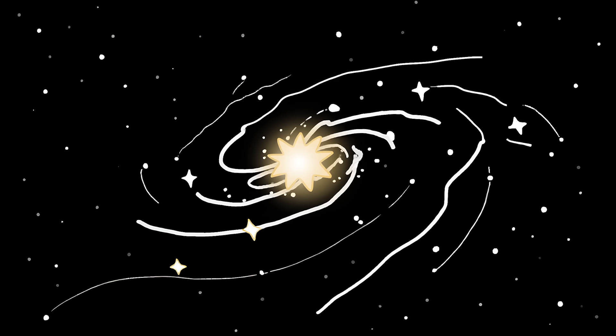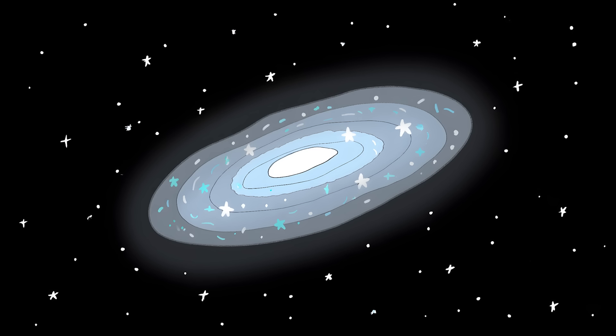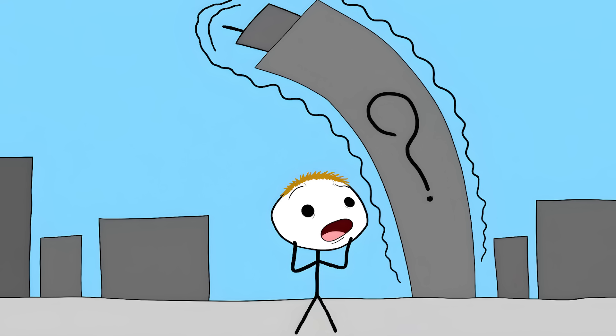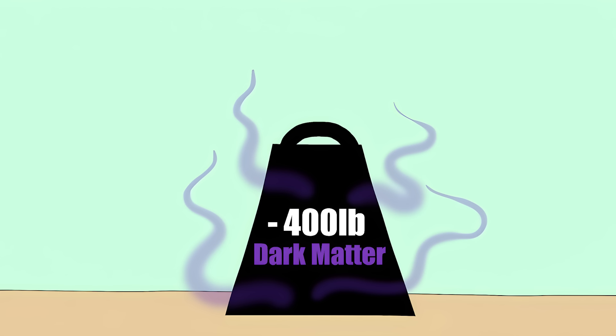Dark matter is like the universe's invisible scaffolding. It's what keeps galaxies from falling apart, like a cosmic Spanx holding everything together. But this galaxy has almost no dark matter at all. It's like finding a skyscraper standing without any support beams.